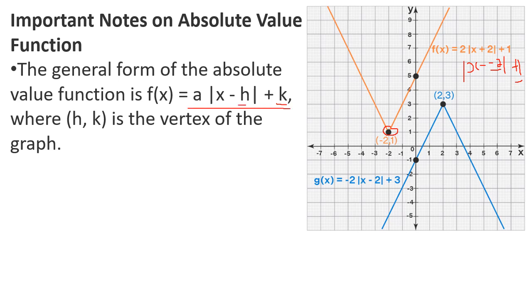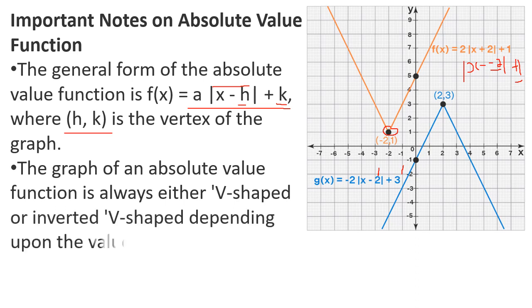If you want to write a vertex at (2, 3), you write x minus h in the formula, where h value is 2 and k value is 3. If you want to write a modulus function, the vertex is at (h, k). The graph of an absolute value function is always either V-shaped or inverted V-shaped, depending on the value of a.